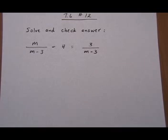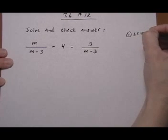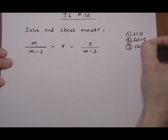7.6 number 12. We're going to continue on solving rational equations using the same three-step approach. First multiply by the LCD, solve the resulting equation, check the solution.